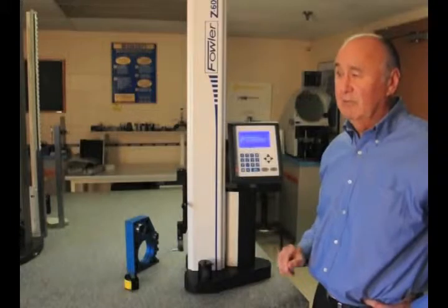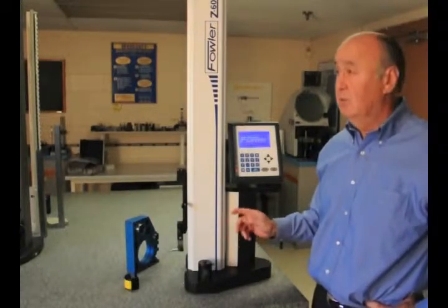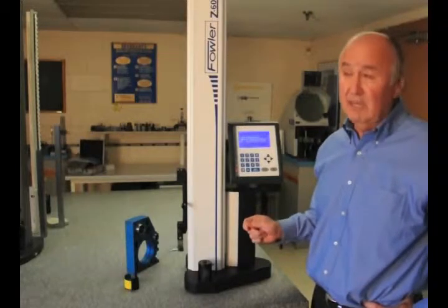What we want to present here is our Fowler number 54-180-600, which is our 24-inch motorized height gauge. It's a 1D gauge called the Fowler Z600.